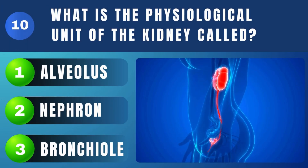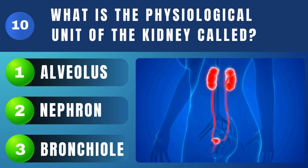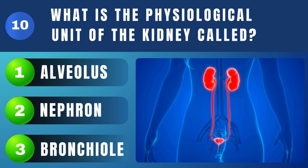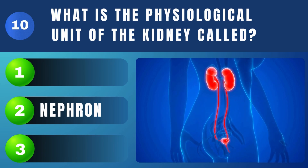What is the functional and physiological unit of the kidney called? Nephron.